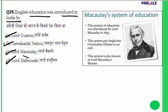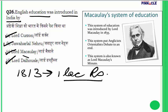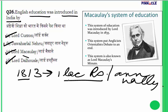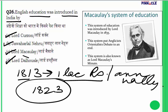Let me give you some background. It was in 1813 that it was decided that one lakh rupees would be spent on the education of Indians through the Charter Act of 1813. This act laid down that if the British are collecting revenue, they should also be responsible for the education of Indians, and one lakh rupees was to be spent annually. But by 1823, it was realized that this money was not being spent.